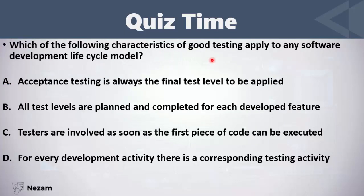Which of the following characteristics of good testing apply to any software development lifecycle model? Acceptance testing is always the final test level to be applied — no, we said that overlap happens. All test levels are planned and completed for each developed feature — this may or may not happen and is not a good characteristic of testing. Testers are involved as soon as the first piece of code can be executed — no, they should be involved as soon as drafts are available. For every development activity, there is a corresponding testing activity. This is correct.